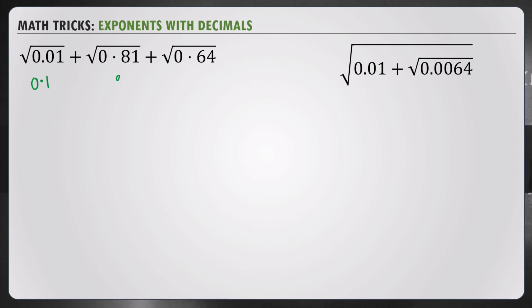Here 81 is 9. And there are 2 places. So, it's 0.9. And here it is 8. 2 places. So, it is 0.8. Add all this together. We get 1.8 as your answer. Isn't that easy?